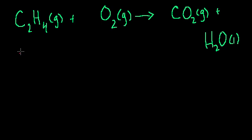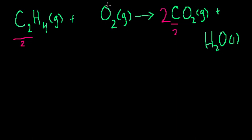Let's start with the carbons. I have two carbons on the left and only one carbon on the right, so let me put a 2 in front of CO2. Now I have two carbons on both sides. Now the hydrogens: on this side I have four hydrogen atoms, and on the other side I only have two, so let me put a 2 in front of the water. Now I have four hydrogen atoms on both sides.